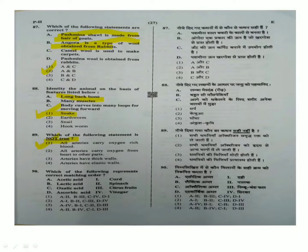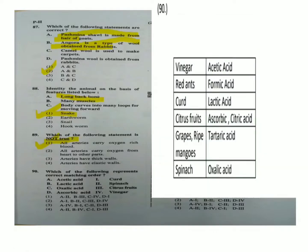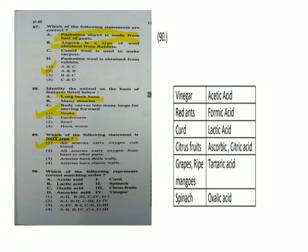The last question: Which of the following represents the correct matching of acids to their sources? Vinegar contains acetic acid. Red ants contain formic acid. Curd contains lactic acid. Citrus fruits contain ascorbic and citric acid. Grapes and ripe mangoes contain tartaric acid. Spinach contains oxalic acid.